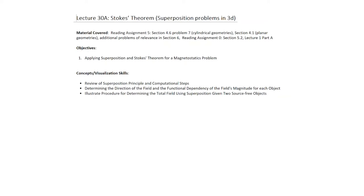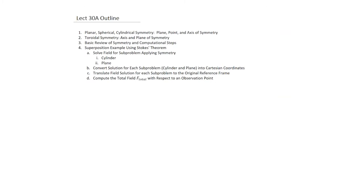The objectives are to apply superposition and Stokes' theorem for a given magnetostatics problem. The concepts and visualization skills include a review of the superposition principle and computational steps, determining the direction of the field and the functional dependency of the field's magnitude for each object, and illustrating the procedure for determining the total field using superposition given two source-free objects. The outline is a summary of the slides to follow.